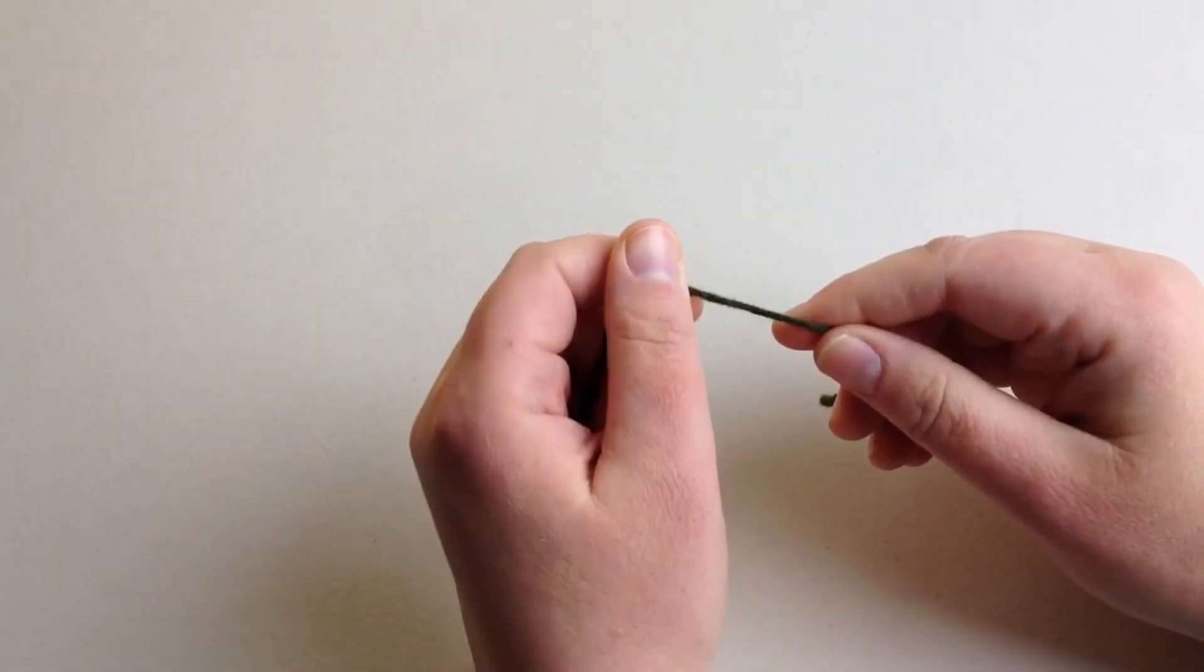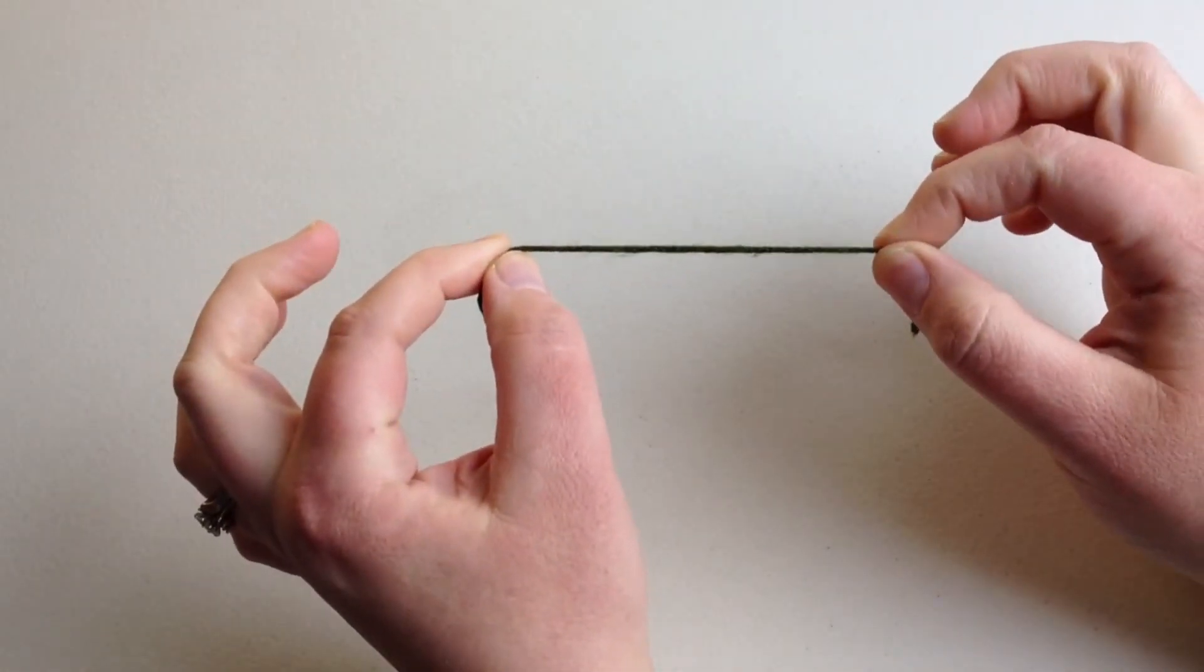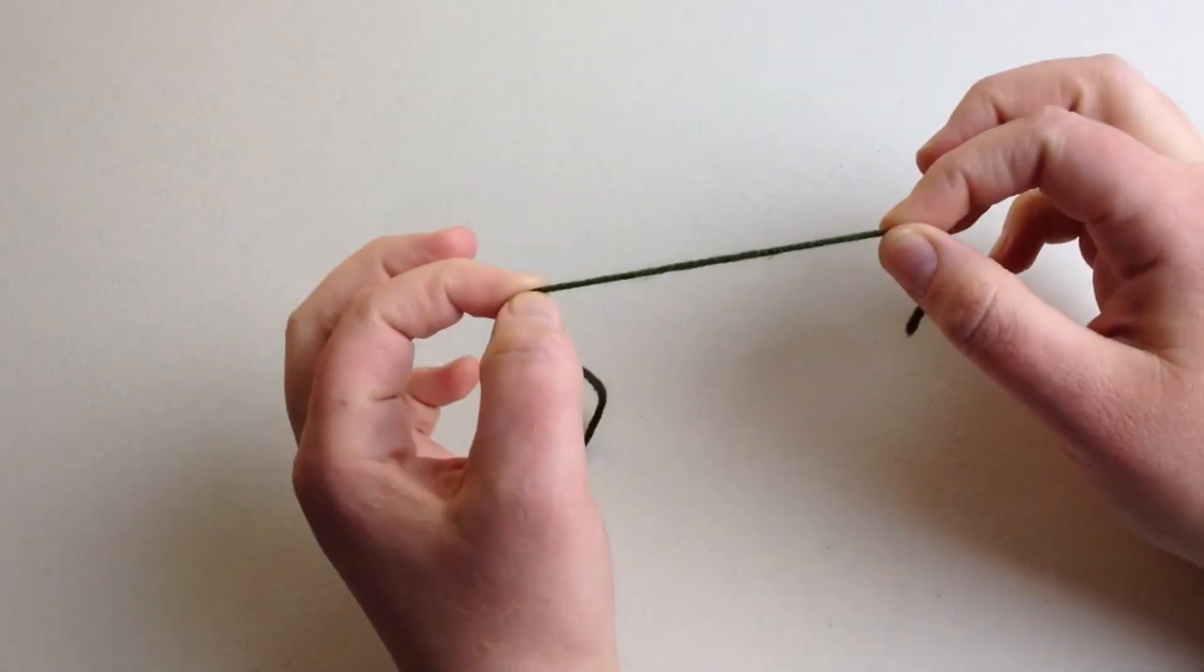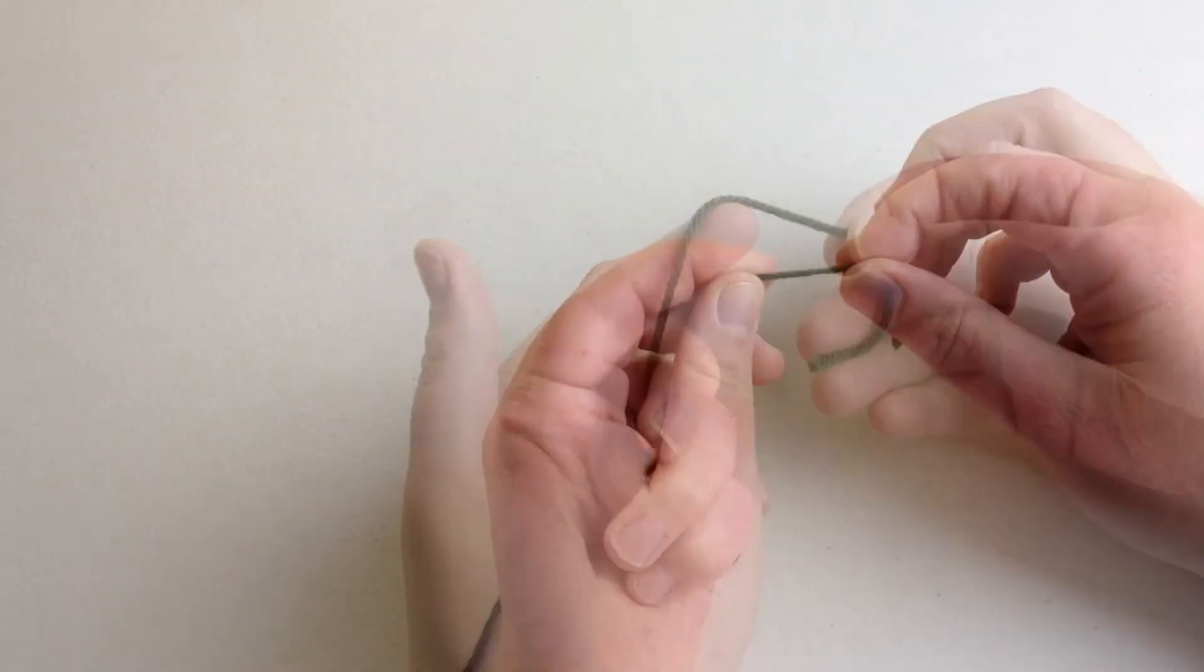Welcome back to Good Knit Kisses. I'm your host Kristen, and today we are going to take one single strand from one ball of worsted weight yarn and make it into three strands held as one out of one ball.